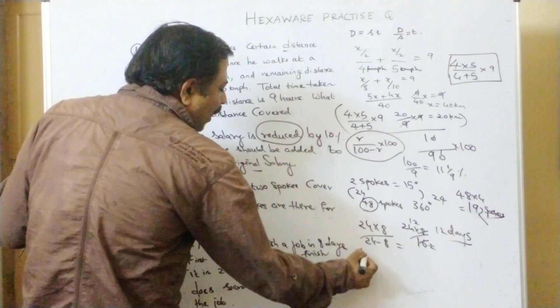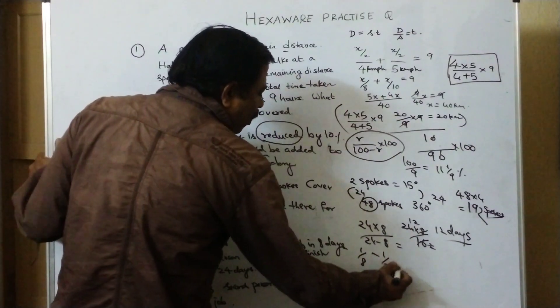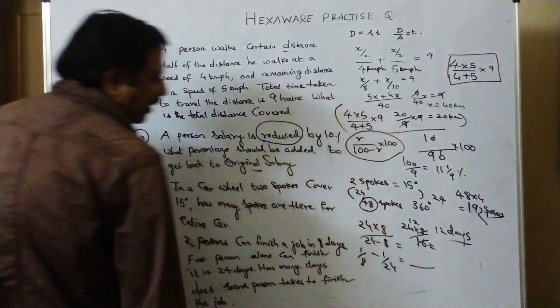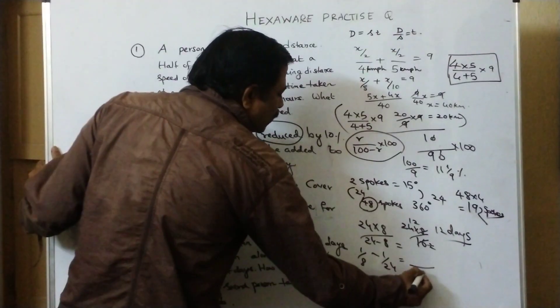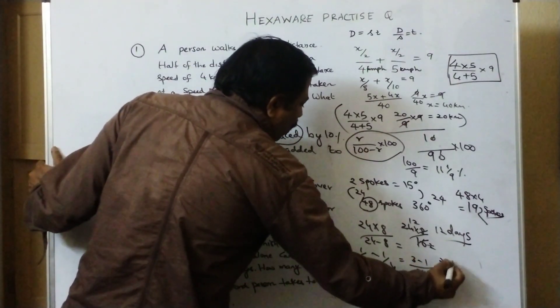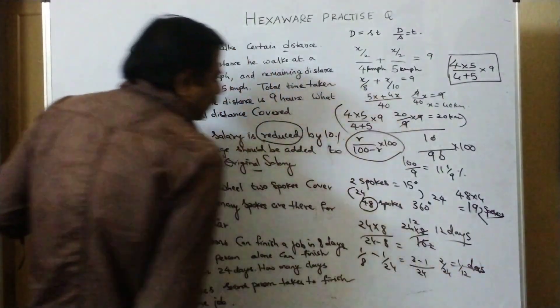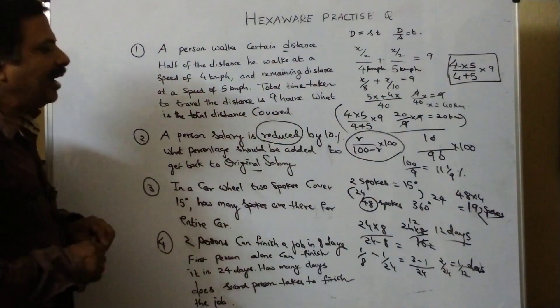Otherwise, 1 by 8. Two persons can do a job in 1 day. 1 by 8 minus A can do it in 1 by 24. 1 by 8 minus 1 by 24. LCM is 24. 3 minus 1. 2 by 24. 1 by 12 days. B takes 12 days.